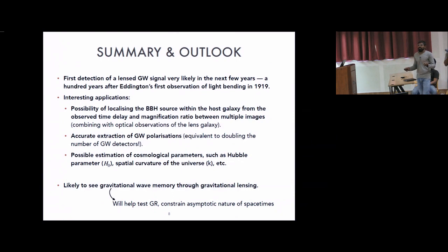Second application could be accurate extraction of gravitational wave polarizations. Right now with two detectors it's not possible to compute gravitational polarization, but if you have a lensed event, you have these two images of the same source. You have extra degrees of freedom that can be used to extract gravitational polarization. Other things also—if you have detected a set of lensed events, then statistically you can find or compute parameters like cosmological parameters, Hubble parameter, and spatial curvature of the universe. Of course there are lots of degeneracies here, but can be broken with the help of electromagnetic observations.